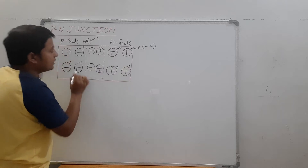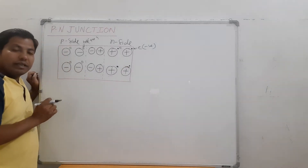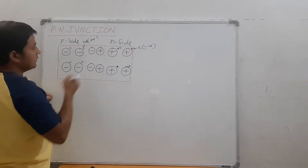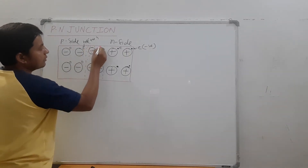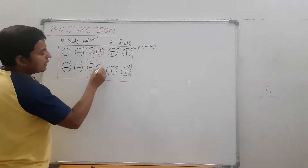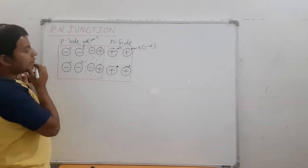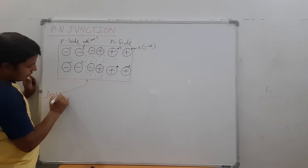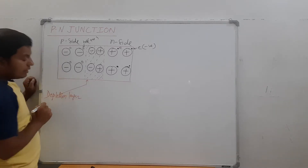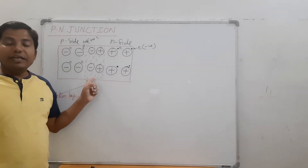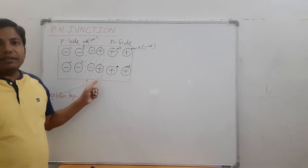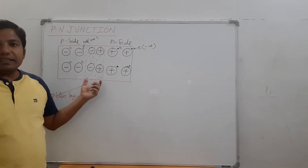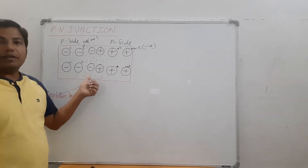Now there is a region where the charge carriers deplete each other — they destroy each other, they recombine. That is why this region is known as the depletion layer or depletion region, because free charge carriers recombine in this region.